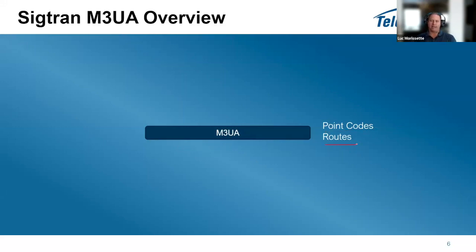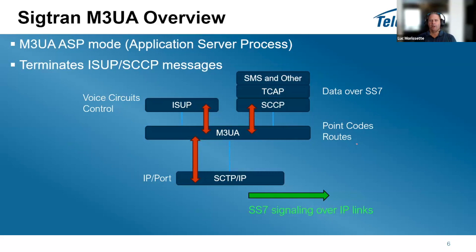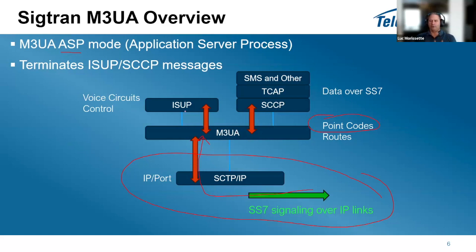Routes allow packets to flow from one source to another destination. In ASP mode — application server process — you receive packets over the IP network. SS7 signaling links come over IP and are received at the M3UA level. Since M3UA has the point codes, when it receives the packets it knows if they are destined to us. You have point codes for ISUP and point codes for SCCP and TCAP. If destined towards us, we keep those packets and control the voice circuits on E1/T1.